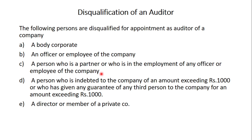Third disqualification: a person who is indebted to the company for an amount exceeding 1,000 rupees, or who has given any guarantee on behalf of any third person to the company for an amount exceeding 1,000 rupees, cannot be appointed as an auditor of a company.